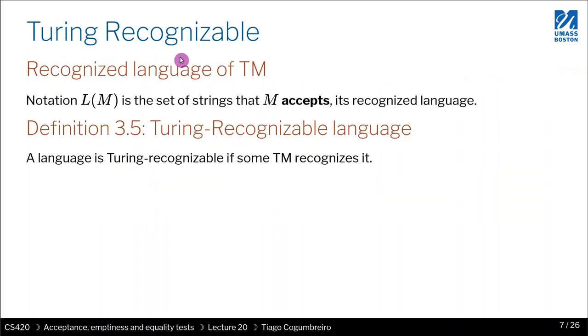Turing recognizability is definition 3.5 of the book that we've been following. The notation is, as usual, the language of the machine.